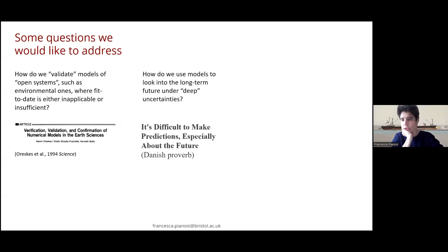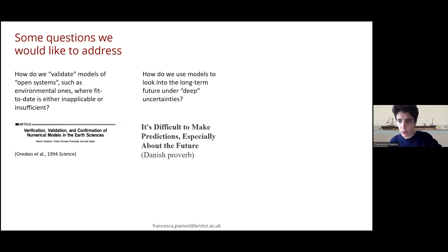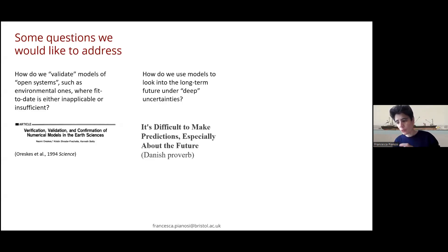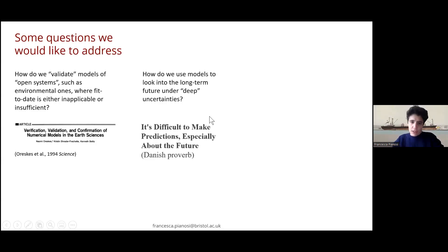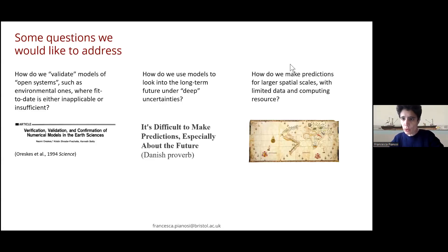The second question I'd like to discuss is: even if we have a model we believe to be valid or good enough, how do we use it when we want to make projections of long-term evolution of the system? The problem is that the input scenarios used to force the model are deeply uncertain, so the range of responses is so large that it's unclear how useful they might be for decision making.